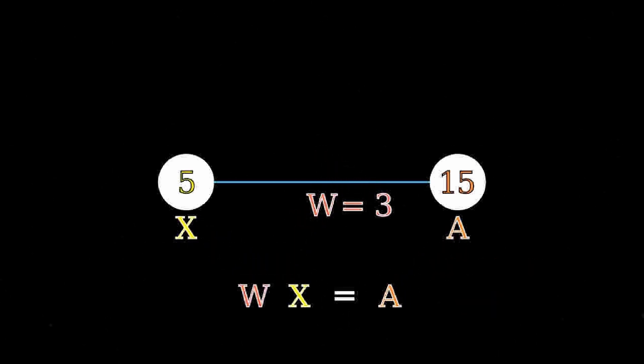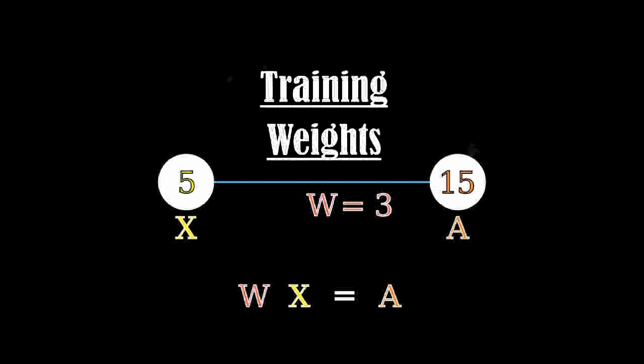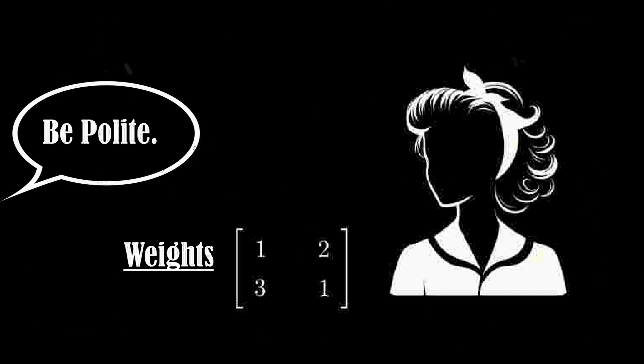These activation values are determined by neuron equations which process the data differently. The variables in these equations are called weights. And through training, an AI learns which weights will allow it to process the data in a way to best achieve its goals. Certain weight values allow the AI to make decisions that achieve better goals, which are defined by humans. For each set of weight values the AI chooses, it receives a reward proportionate to how well it reached its goal.